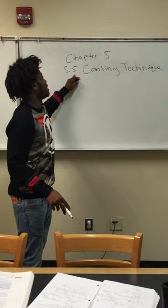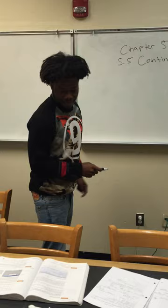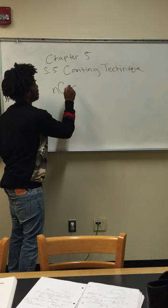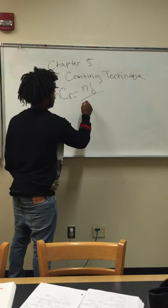The first thing you want to do is find the n objects. n objects are distinct. The formula is n factorial all over n minus r factorial times r factorial.